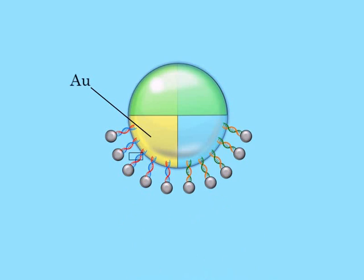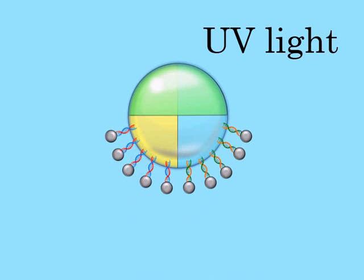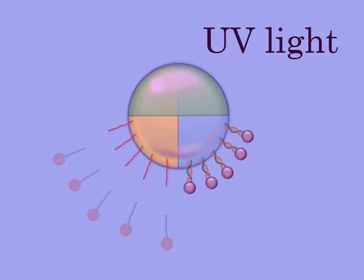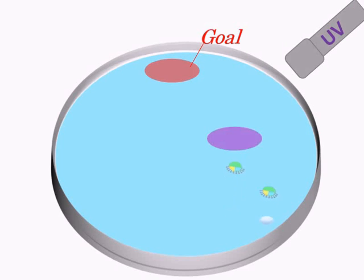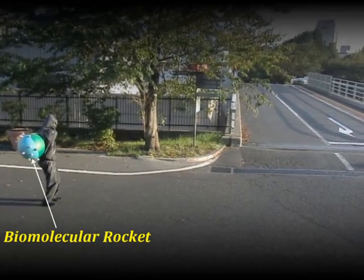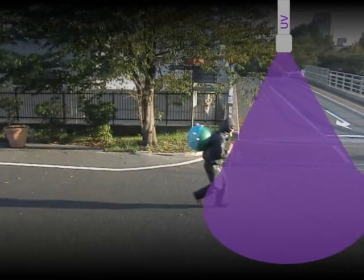Finally, photoresponsive DNA is attached specifically to the half or back side of the body. By irradiating UV light, we can selectively detach the catalytic engine and change the moving direction. Therefore, we can remotely control the direction of the rocket's movement.